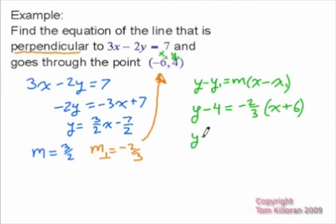And then just simplify. So we get y minus 4 equals negative 2 thirds x minus, 3 goes into 6 twice, and 2 times 2 is 4, so it would be minus 4. And then add 4 across, and we find that it's y equals negative 2 thirds x.